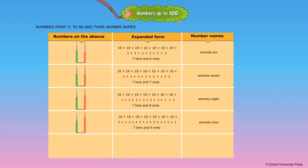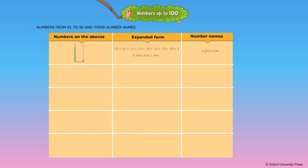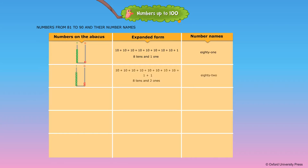8 tens — the number name is written as 80. Numbers from 81 to 90 and their number names. 8 tens and 1 one — the number name is written as 81. 8 tens and 2 ones — the number name is written as 82.